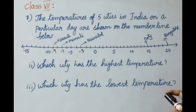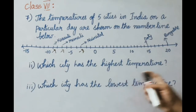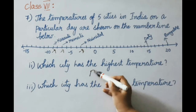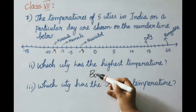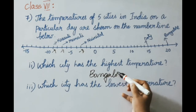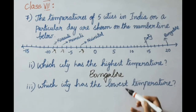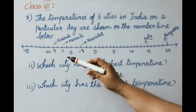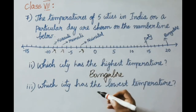See the second question: which city has the highest temperature? Bangalore, that is 20 degrees Celsius. See the third question: which city has the lowest temperature? Kazoli, that is minus 9 degrees Celsius.